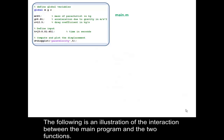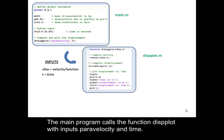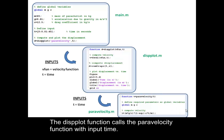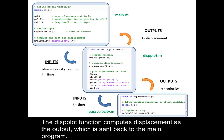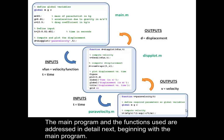The following is an illustration of the interaction between the main program and the two functions. The main program calls the function DISPLOT with inputs PARA VELOCITY and TIME. The DISPLOT function calls the PARA VELOCITY function with input TIME. The PARA VELOCITY function computes velocity as the output, which is sent back to DISPLOT. The DISPLOT function computes displacement as the output, which is sent back to the main program. The main program and the functions used are addressed in detail next, beginning with the main program.